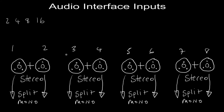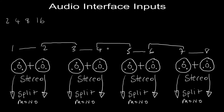So if you have a stereo record track, whether it's in Logic, Pro Tools, or whatever, a stereo record track can only be fed by stereo inputs one and two together as a pair, or three and four together, or five and six together, or seven and eight together. What you can't have is a stereo record track being fed from inputs two and three together, or four and five, or six and seven, because those inputs come from different stereo pairs and can't be tied together to feed a stereo track.